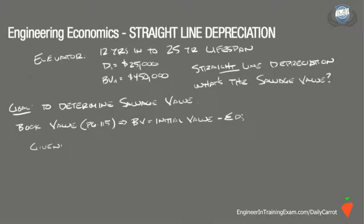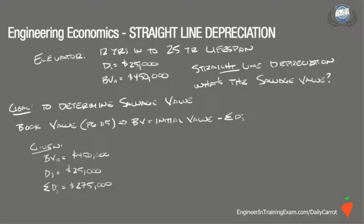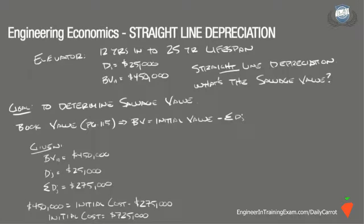In this problem, we are given a book value in year 11, which is last year, of $450,000. We also know that the uniform depreciation charge is $25,000. So the accumulative depreciation through 11 years is $275,000. Plugging these values into the equation, we determined that the initial cost of the system was $725,000.